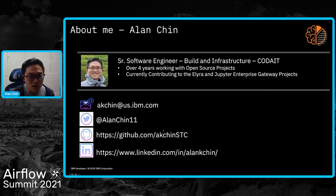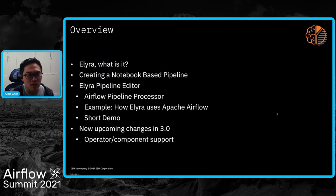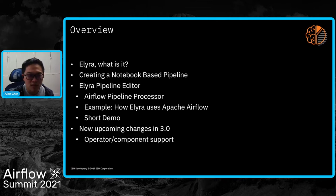So a brief overview of what I want to go over today. First, what is Elyra? I'm going to give a little background on how Elyra works with creating a notebook-based pipeline and the concept behind it. We'll go over the main centerpiece — the visual pipeline editor — how we leverage Airflow with our pipeline processor, and go over a short demo. Then we'll quickly cover some upcoming changes in version three of Elyra, including support for operators and components.